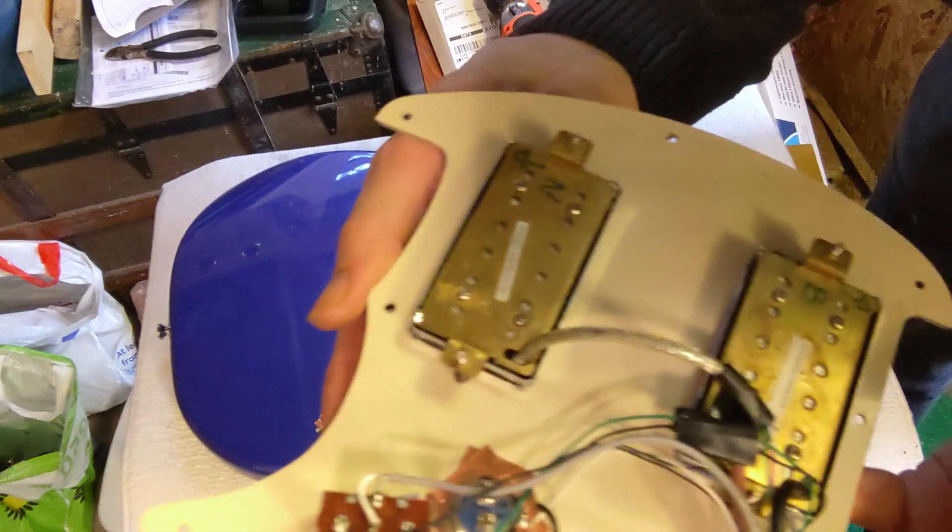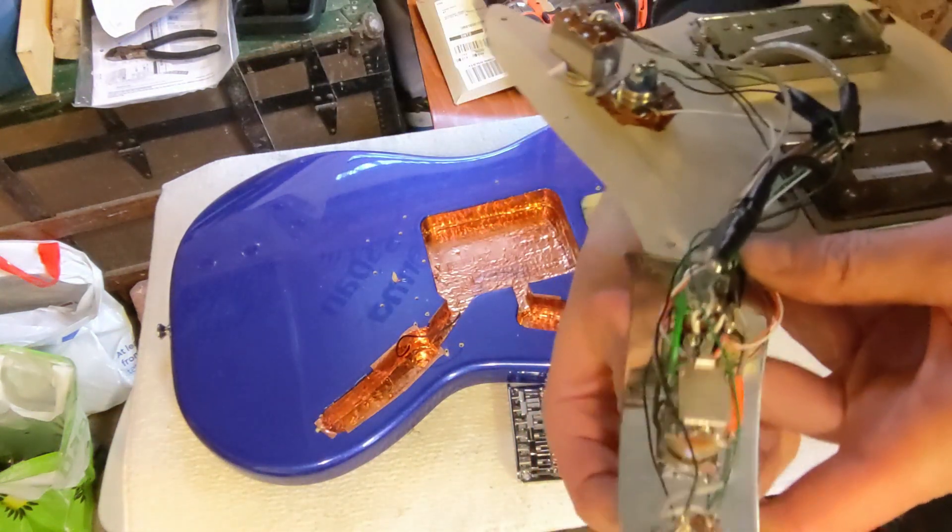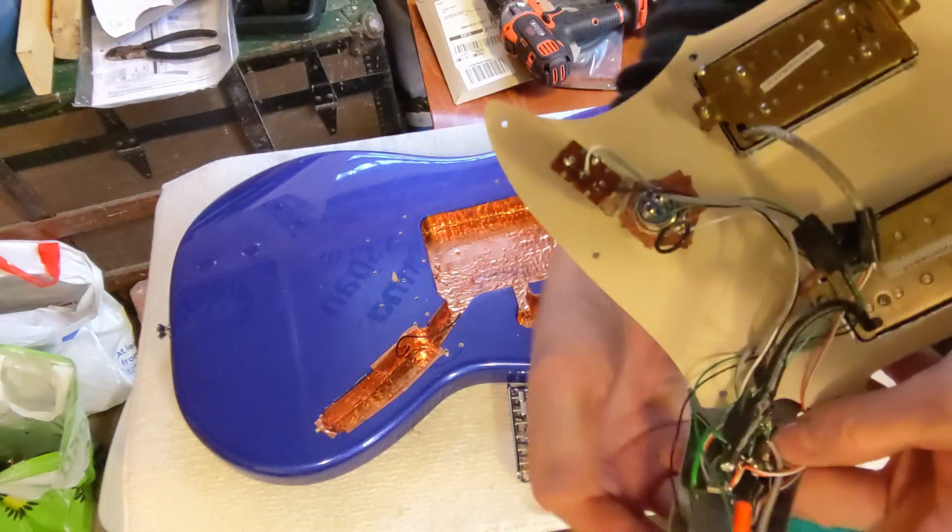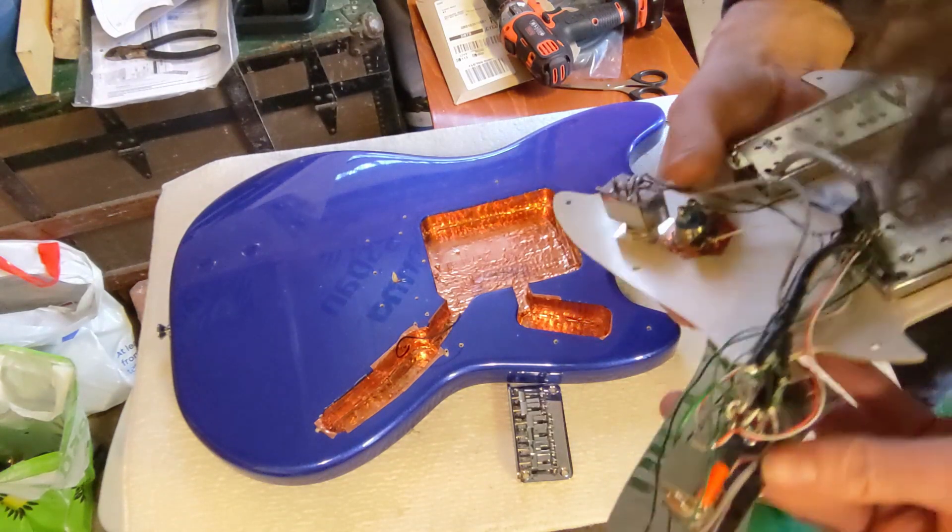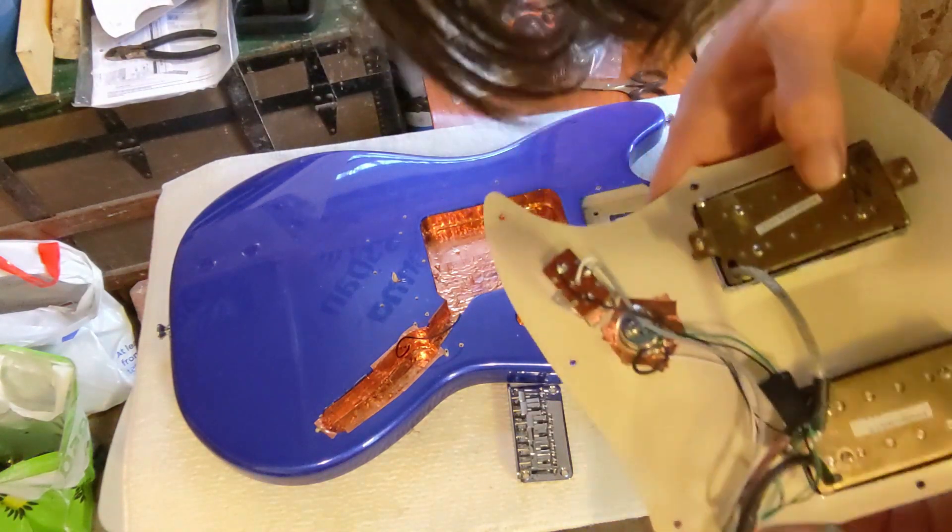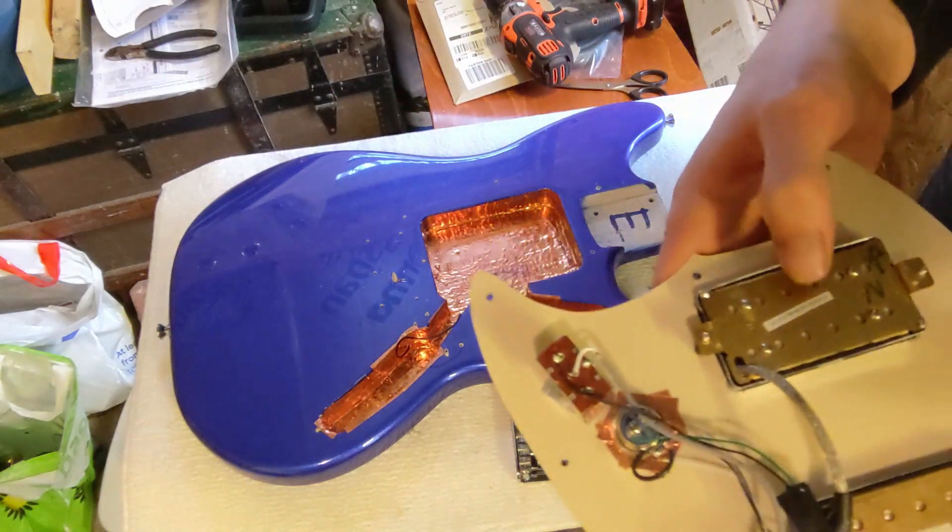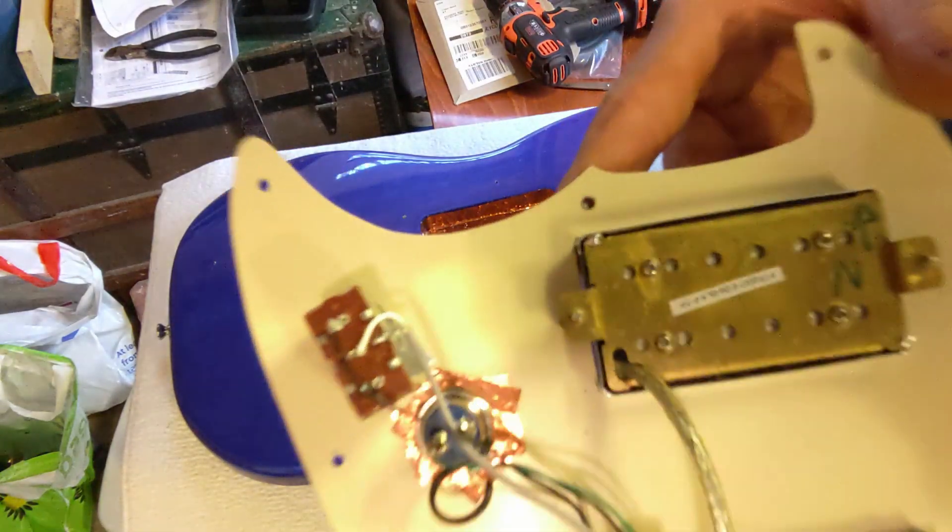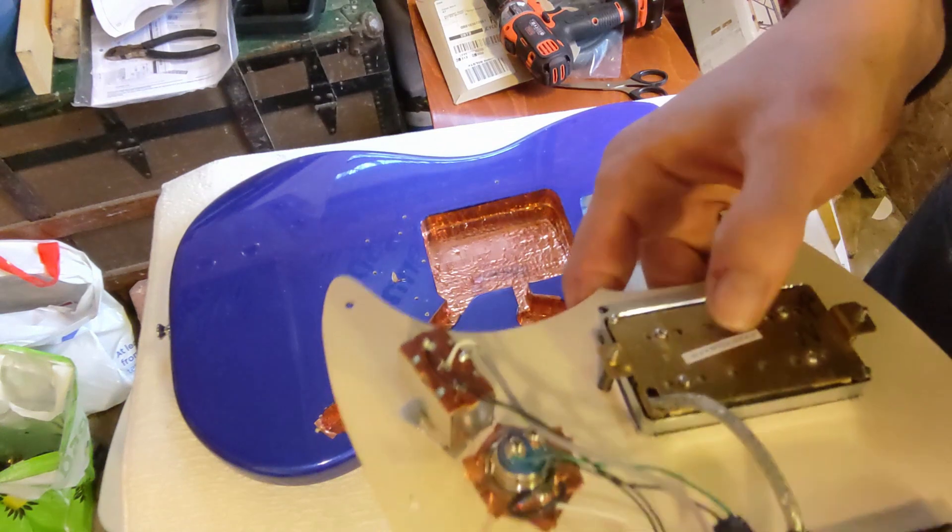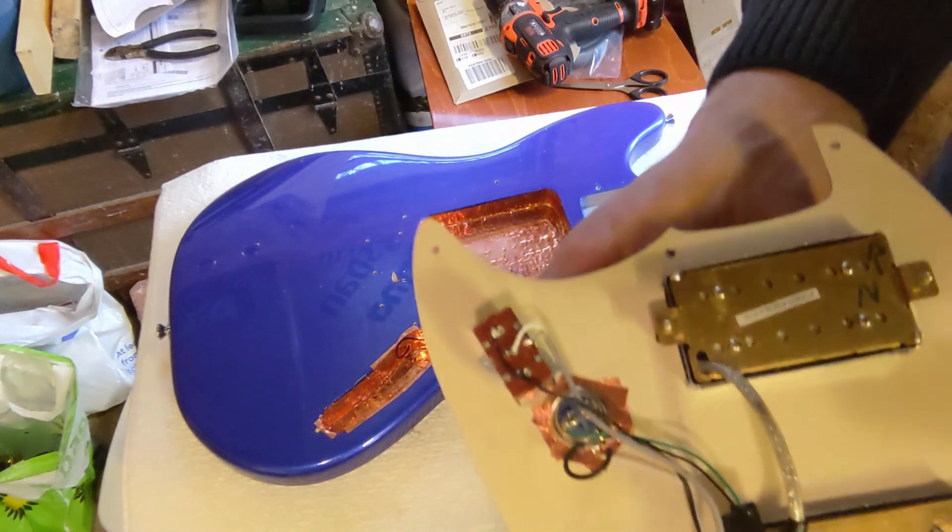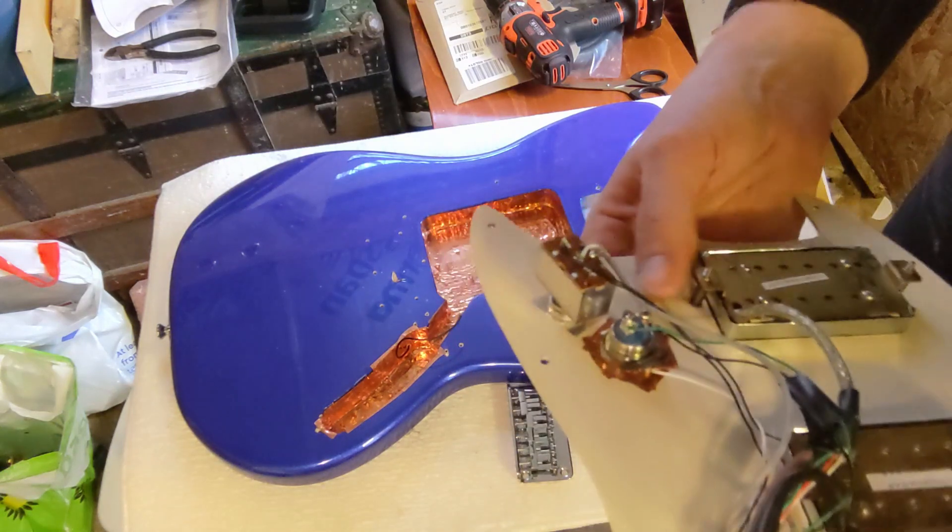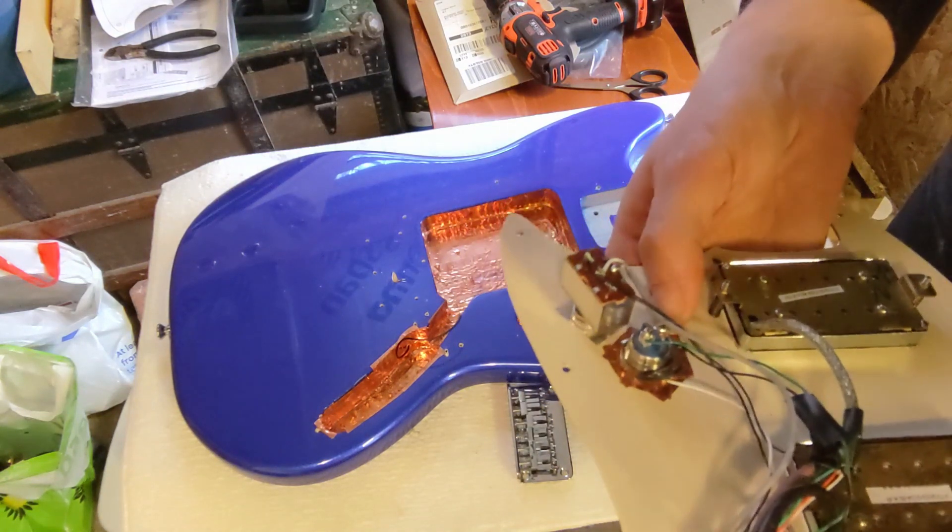All right, so you can see here we have the push-pull pot split. I had a .33 on there. And these are the old original humbucking pickups that came on the Squire. They sound all right. It's actually a pretty decent switch I put on here. Sounds good. And here's that kill switch that's there.